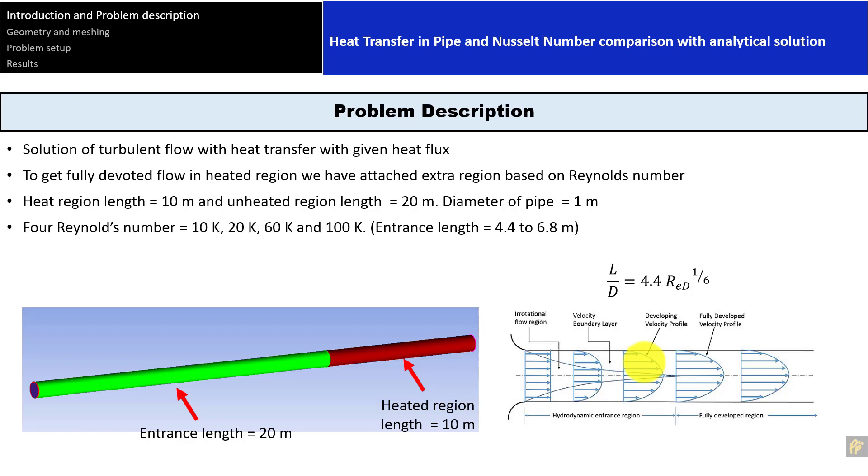First, let me describe the problem. This is turbulent flow based on Reynolds number. The Reynolds number definition is density times velocity times diameter for pipes, or length for flat plates, divided by viscosity. For internal flow, the flow becomes turbulent when Reynolds number is greater than 4000. For this problem, we're starting from Reynolds number 10,000, then also getting solutions for 20,000, 60,000, and 100,000.